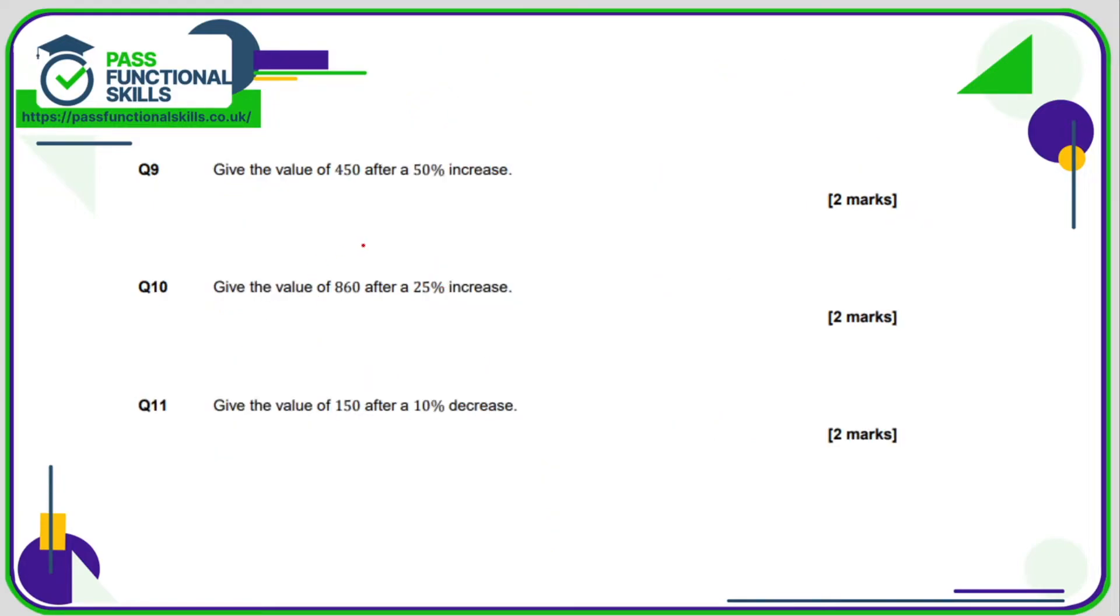Question number 9, we can use a calculator now. So a couple of ways to do this. It depends on how good you are at understanding percentage multipliers. You might, for question number 9, you might just want to work out, well, what is 50%? 450 divided by 2 is 225. So 50% is 225. So we're adding that on to the 450. And that is 675. 25% is a quarter. So what is a quarter of 860? Divide that by 4 is 215. So we just add that on to the 860. And that gives us an answer of 1075.